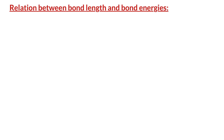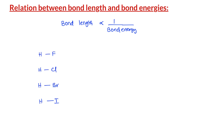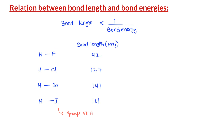Bond lengths are inversely related to bond energies. For example, consider four molecules: HF, HCl, HBr, and HI. In all these molecules hydrogen is constant, while fluorine, chlorine, bromine, and iodine all belong to group 7A or 17. We know that down the group the atomic size increases. Therefore, the bond length — the internuclear distance between the hydrogen and the halogen — keeps increasing. And if you look at the bond energies, they keep decreasing from fluorine to iodine.